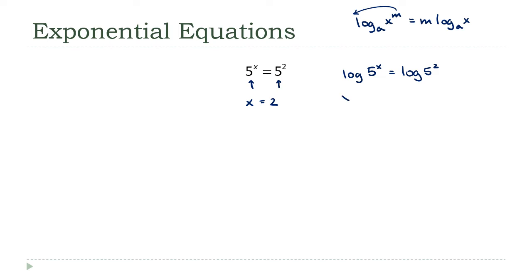If I do that on the left side, this becomes x times the log of 5. And if I do it on the right side, it becomes 2 times the log of 5. Well, the log of 5 is just a number. It's a weird decimal number, but it's still just a number. So I can divide both sides by it. If I divide both sides of this by the log of 5, a whole lot of canceling happens and all that's left is x equals 2. So we get the same answer either way.